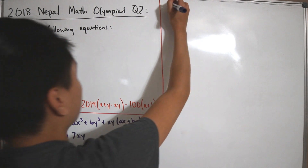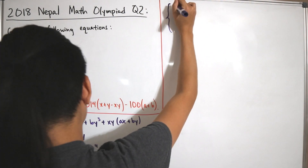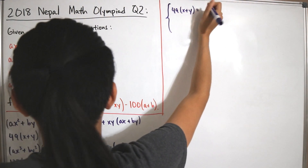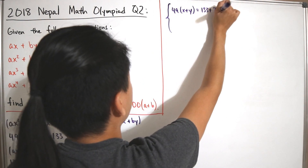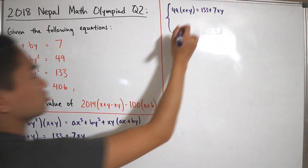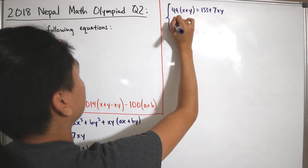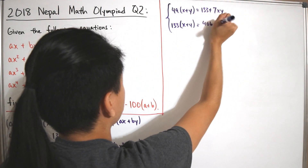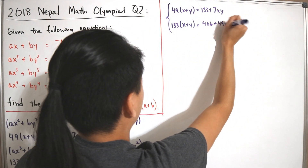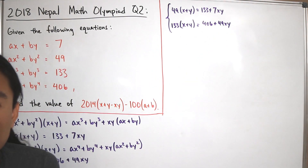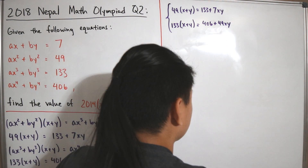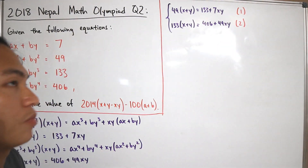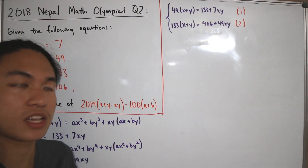Writing the system of equations clearly: Equation 1 is 49(x + y) = 133 + 7xy, and Equation 2 is 133(x + y) = 406 + 49xy. These two equations involve the two unknowns x + y and xy that we want to solve for.